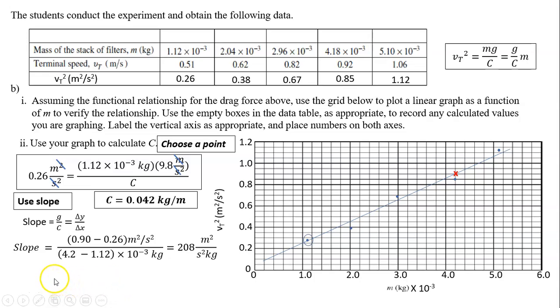My slope is 0.9. That's the vertical axis, 0.9 minus 0.26, that's my original one, divided by the horizontal, 4.2 minus 1.12. So I have my slope is 208 meters squared divided by second squared times kilograms. Pay attention to your units. This will definitely cost your points if you don't put the units down. The slope is not what they are asking for.